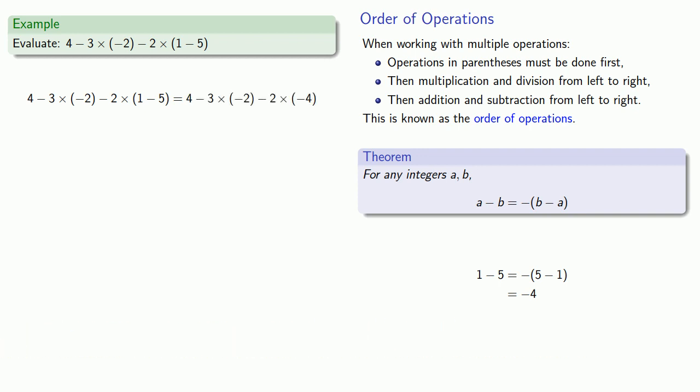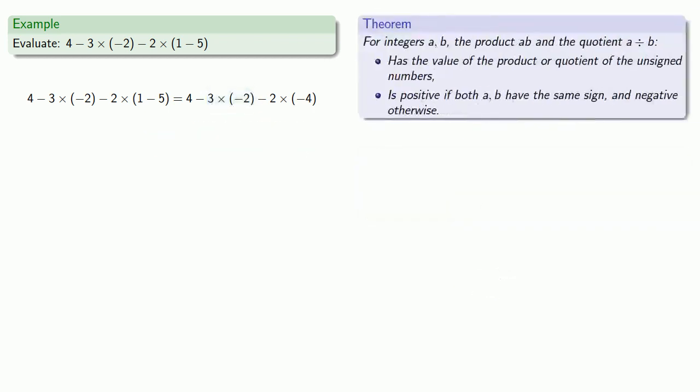So I have a subtract a multiply a subtract a multiply, I should do those multiplications first. I'm not subtracting so this is actually 3 times negative 2. So I'll ignore the signs, that's 3 times 2, and because the factors 3 and negative 2 have opposite signs, my final result will be negative. Likewise this minus is actually a subtraction, so this product is 2 times negative 4 which will be negative 8, and so I have 4 minus negative 6 minus negative 8.